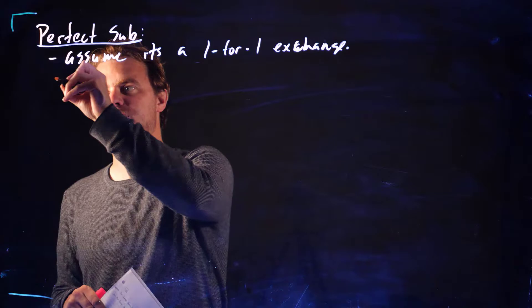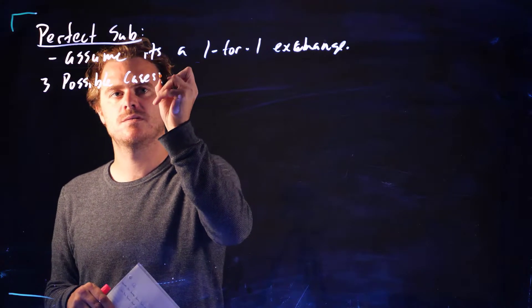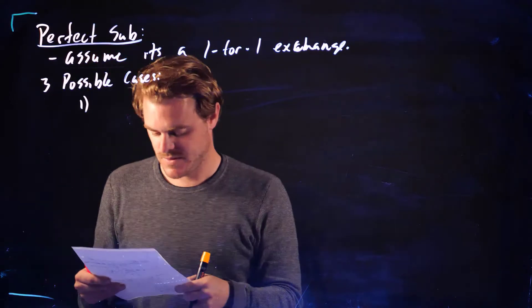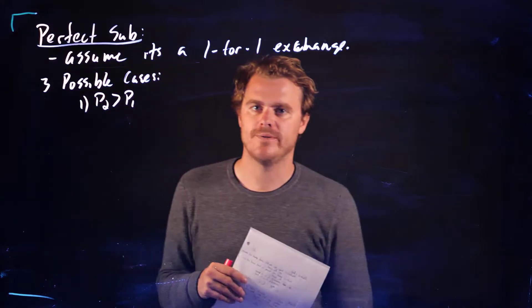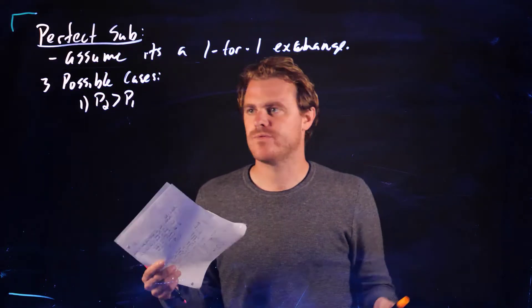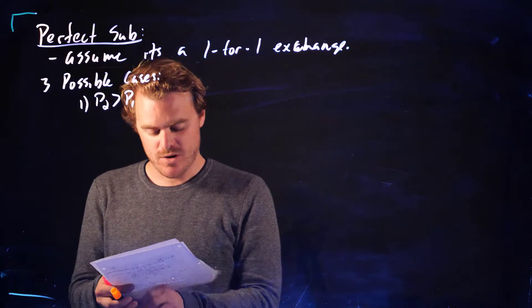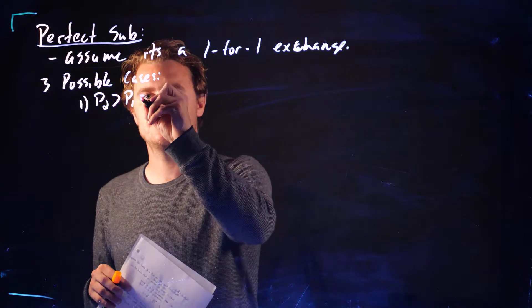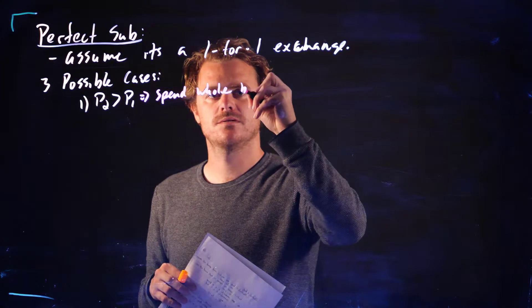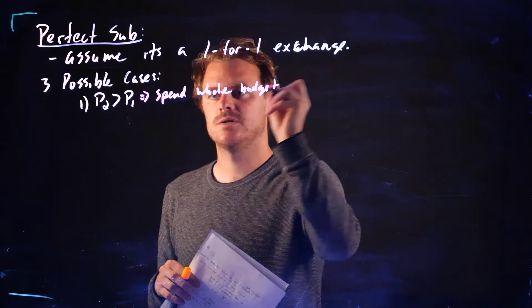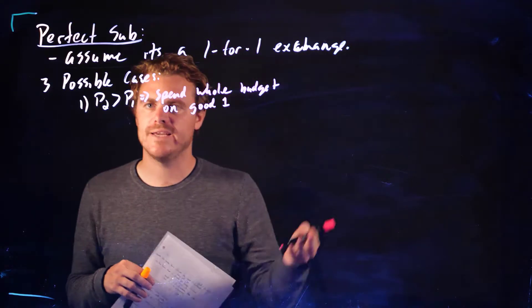So we can have three possible cases. The first is the price of good 2 is greater than the price of good 1. We're willing to exchange them one-for-one. Well, we're going to spend our whole budget on good 1 because it's cheaper.